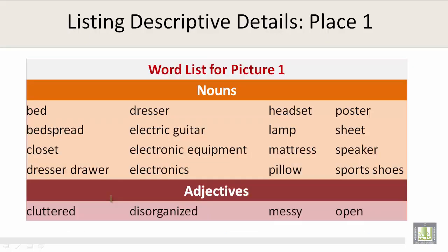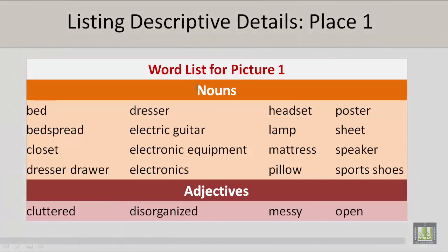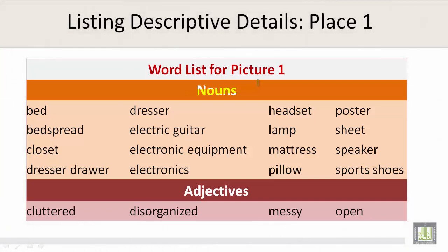Let's take a look at the word list for Picture 1. We have a lot of different nouns: bed, bedspread, closet, dresser, drawer, electric guitar, electronic equipment, headset, lamp, mattress, pillow, poster, sheet, speaker, and sports shoes. And adjectives such as cluttered, disorganized, messy, and open.